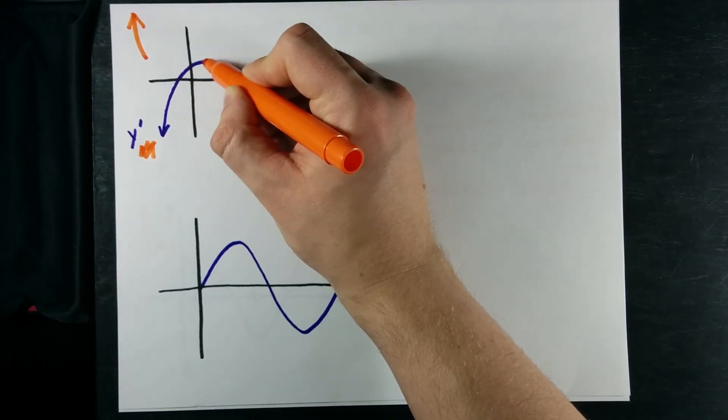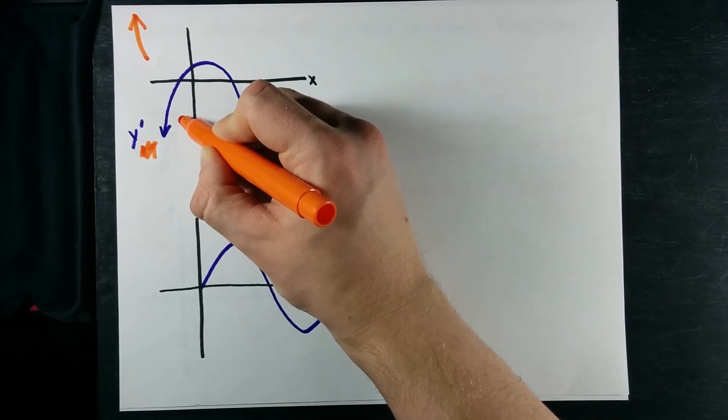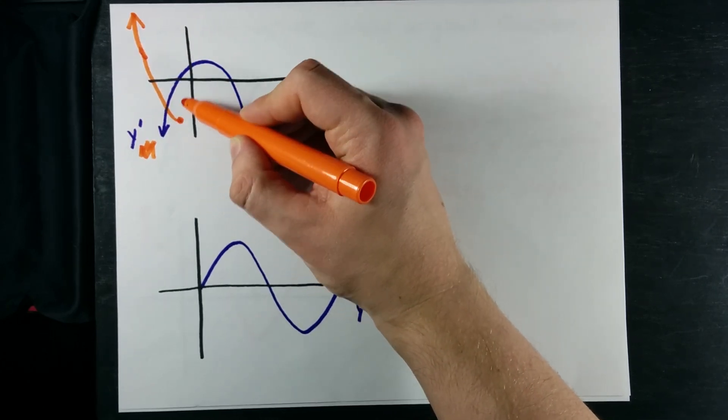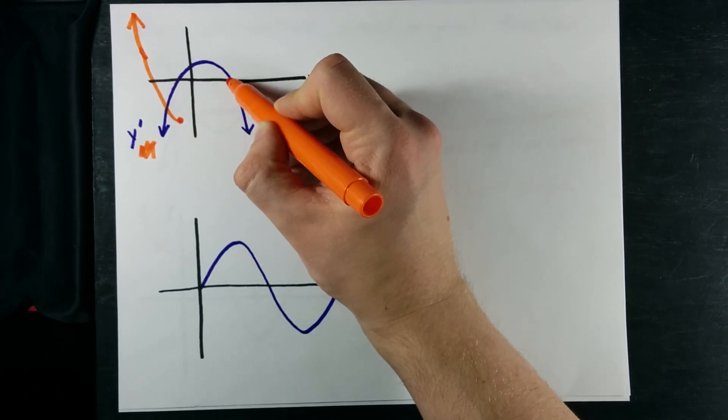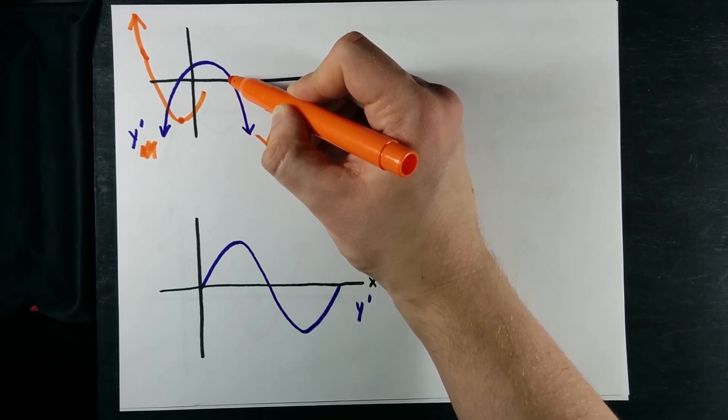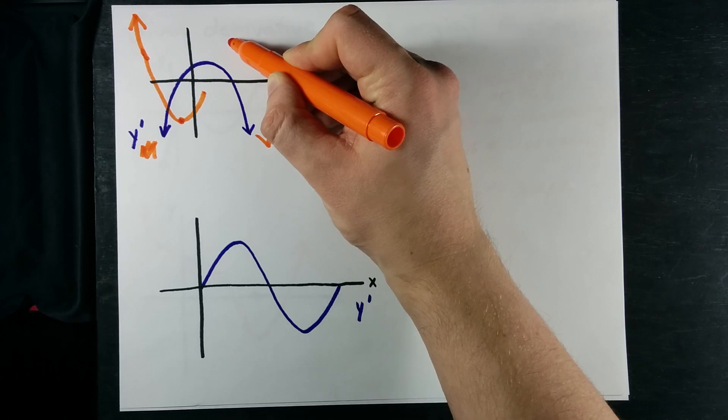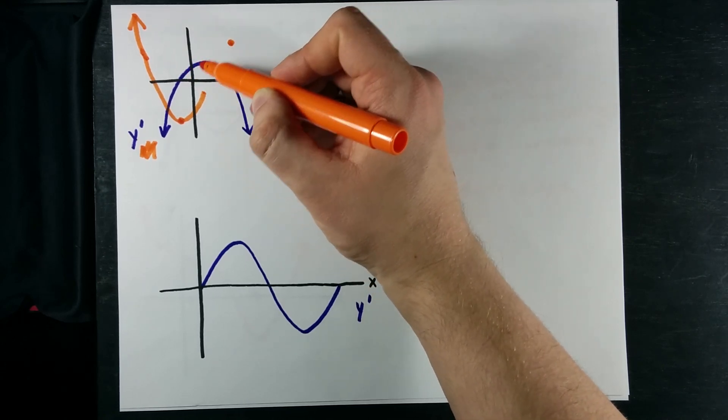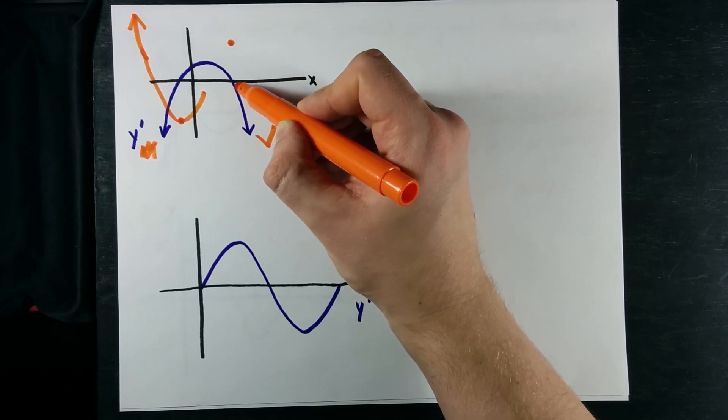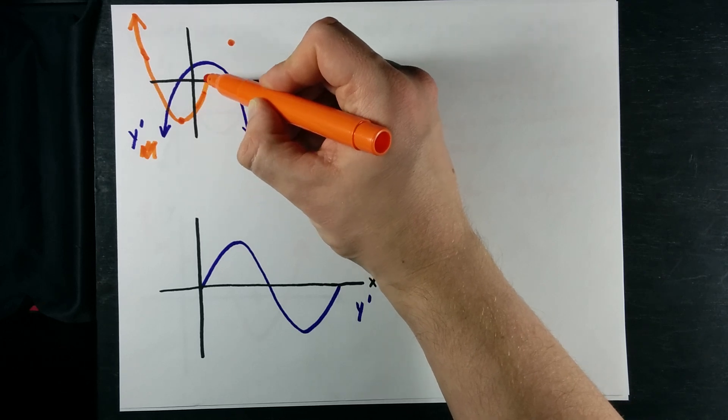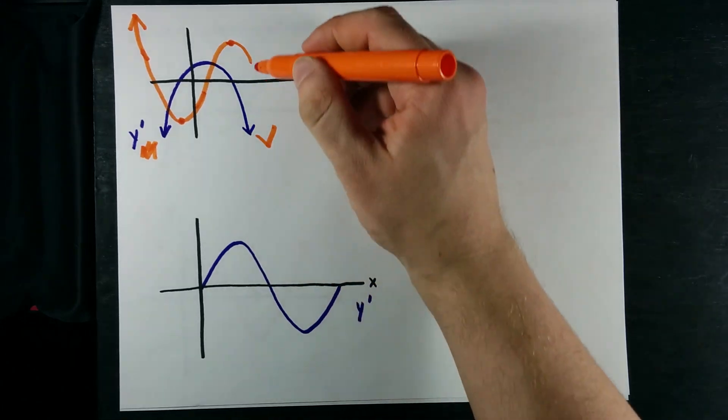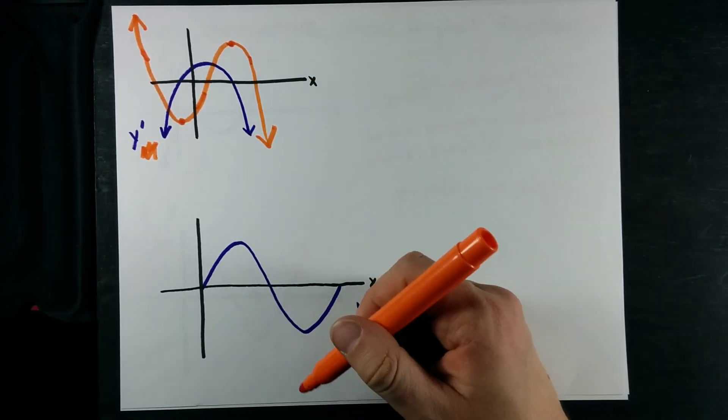If I flip from decreasing to increasing, that means I have a minimum. So I'm just going to come down and reach a minimum there. Then I have to increase because my derivative is above the x-axis. Increase. And when my derivative reaches an x-intercept, that has to be a max or a min. Or a point of inflection. Because I flip from above the x-axis to below, that means I'm flipping from an increasing function to a decreasing function. And it ends up being a maximum. Then I continually decrease for the rest of it.